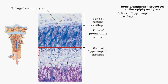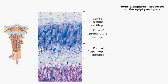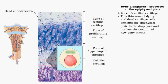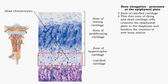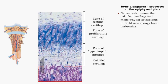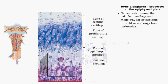In the zone of hypertrophic cartilage, chondrocytes mature and enlarge. This maturation also helps to expand lacunae and lengthen the diaphysis. The thin zone of calcified cartilage is only a few cells thick and consists of older and dying chondrocytes. The cartilage matrix near these cells has calcified. Osteoclasts break down the calcified cartilage, paving the way for osteoblasts from the diaphysis to deposit new bony matrix.